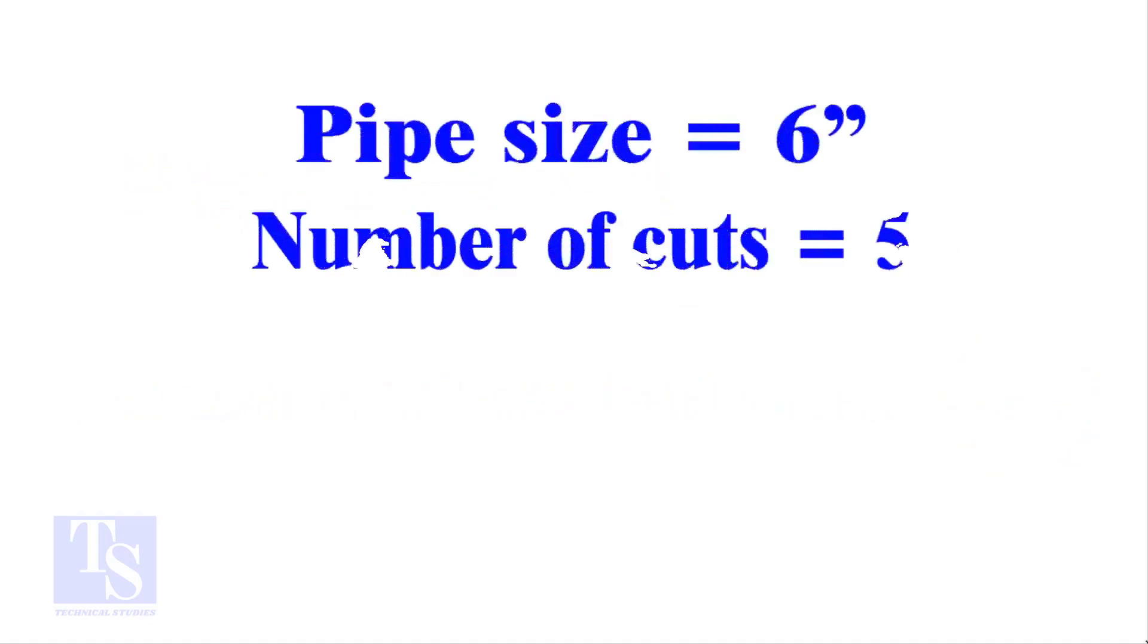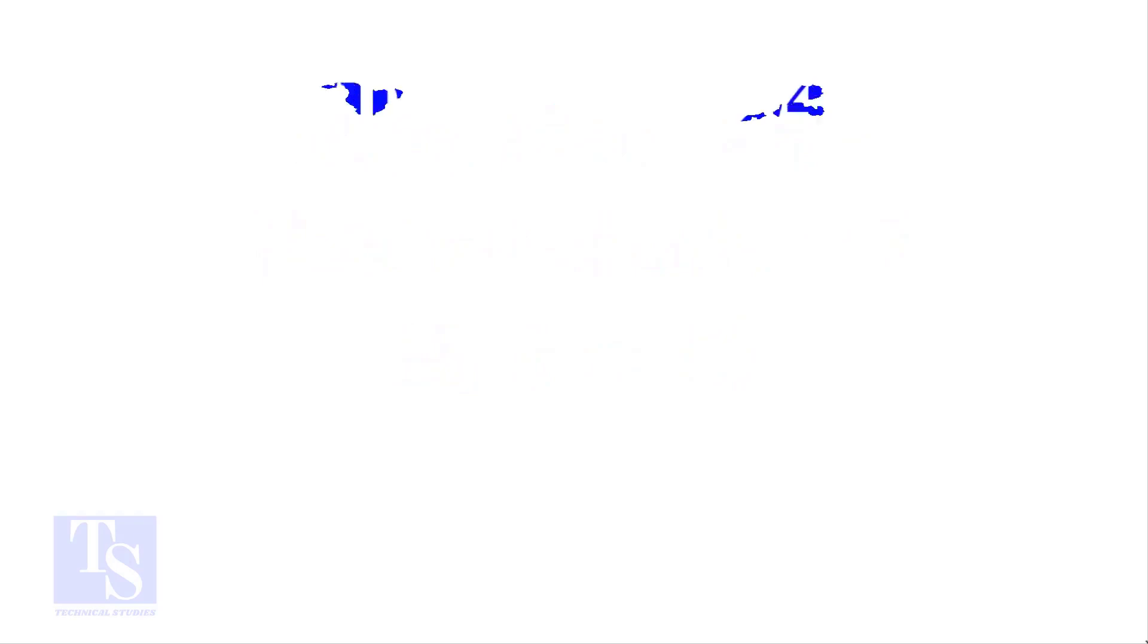Let me show you more examples. Pipe size 6 inches, number of cuts 5, and the answer is 13. Calculate the cutback in any method and compare it with this answer. Surprised! I will show you another example, this time a large pipe and more cuts.